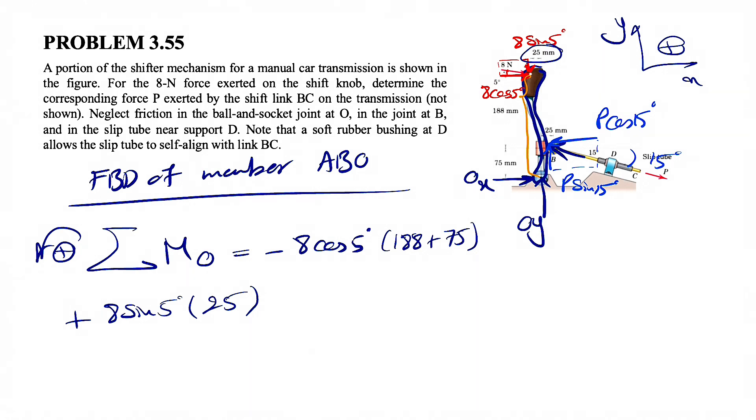And for the force P, we're going to have the moment of X component in this direction. So counterclockwise positive plus P cosine of 15 degrees, and the distance would be 75. And the other one P sine of 15 would be also counterclockwise, and that distance is also 25 millimeter.